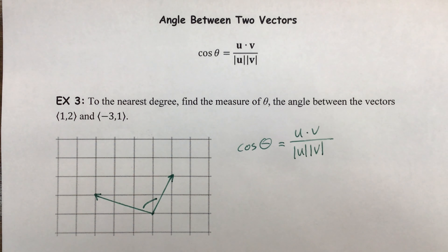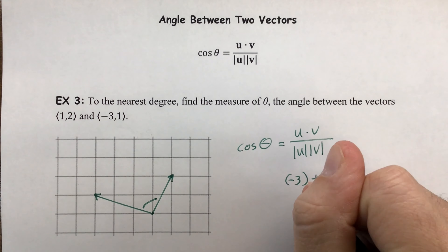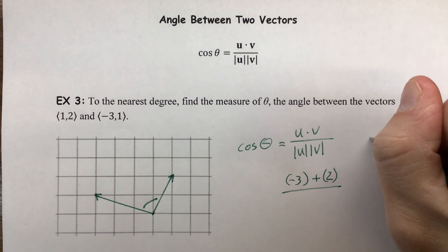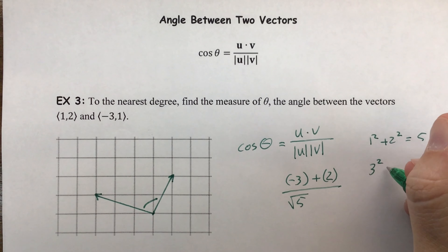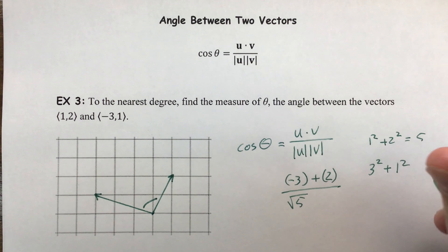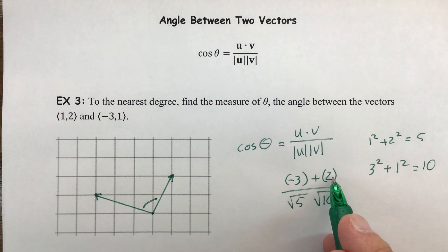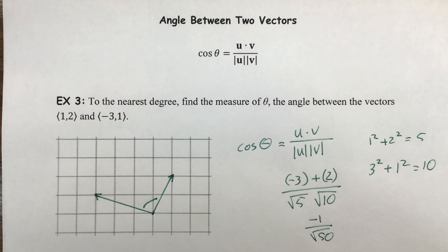For the dot product, we take the product of the x's — that's 1 and -3 — which gives negative 3, plus the product of the y's, which gives 2. We divide that by the product of the magnitudes, which requires Pythagorean theorem. For the first vector: 1² + 2² = 5, so the magnitude is √5. For the second vector: 3² + 1² = 10, so the magnitude is √10. Adding the dot product gives -1 in the numerator. At the bottom, the product of the radicals is the square root of the product of the radicands, giving √50.